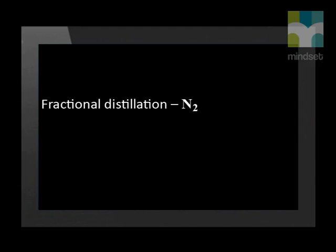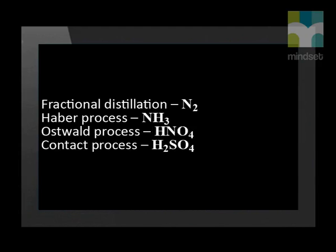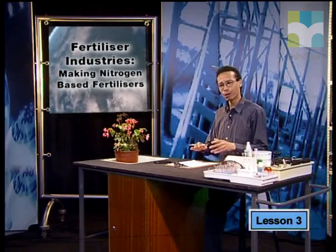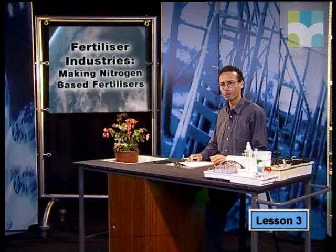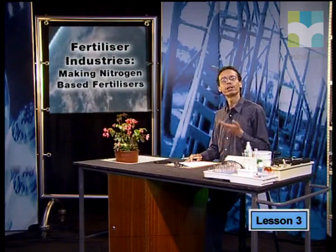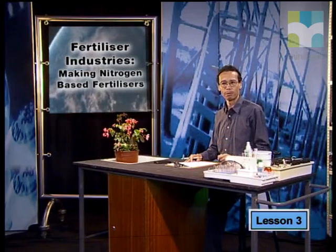Amongst other processes, we will look at the fractional distillation of air, nitrogen extraction, the Haber process for the production of ammonia, the Ostwald process, and the contact process for the production of sulfuric acid. The processes involved in making fertilizers from nitrogen are quite complex, but it's important that you get an overview of the processes.